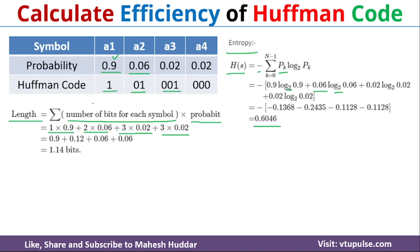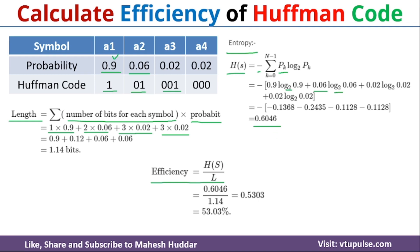Once you calculate the total number of bits required to represent the Huffman coding and the entropy, you can calculate the efficiency easily. Efficiency is always equivalent to entropy divided by the total number of bits required. So the entropy is 0.6046 divided by the total number of bits 1.14, and once you solve it, you will get 0.5303 as the efficiency — that is nothing but 53.03%. This is the simple approach to calculate the efficiency of Huffman coding for the given symbols with associated probabilities.